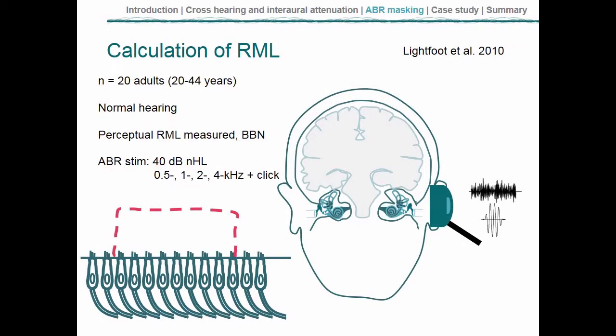We have that information. This is a study published some years ago by Guy Lightfoot and others. Guy Lightfoot is a trusted and valued colleague and collaborator with the Interacoustics family, and he's done a lot of work for the benefit of the wider audiology audience in terms of masking the auditory brainstem response. This is one of those pieces of work, and it's somewhat ingenious in its simplicity of how they calculated that position on the masking function — the relative masker level.